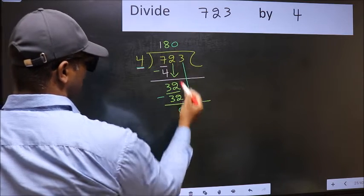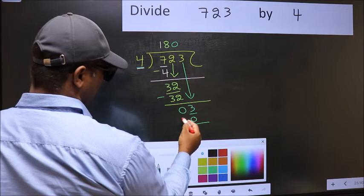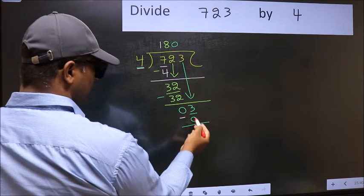So 4 into 0, 0. Now you should subtract. 3 minus 0, 3.